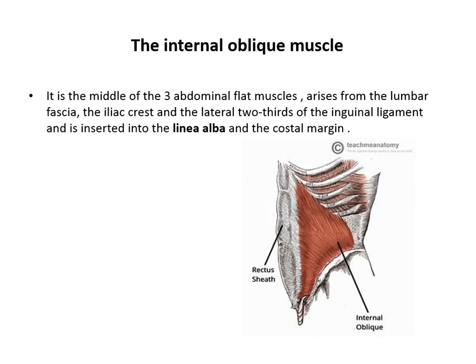The middle of the three abdominal flat muscles is the internal oblique muscle. This arises from the lumbar fascia, the iliac crest, and the lateral two-thirds of the inguinal ligament, and is inserted into the linea alba and costal margin.